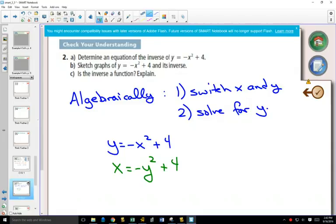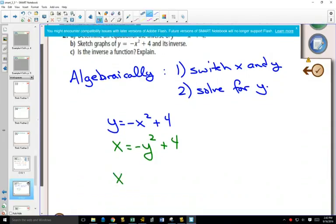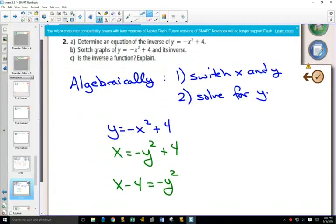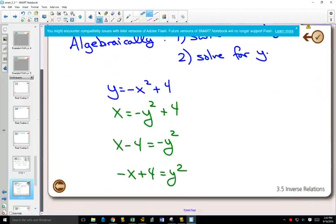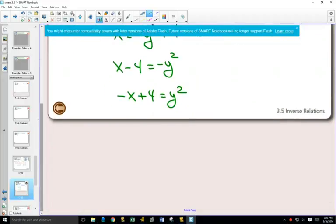And then solve for y. So we're going to subtract 4 on both sides. In order to get rid of that negative in front, we can either divide by negative 1 or multiply by negative 1. So I'm going to multiply by negative 1. And then we can square root both sides. And we get plus or minus the square root of negative x plus 4.